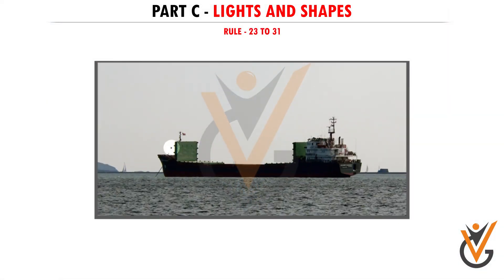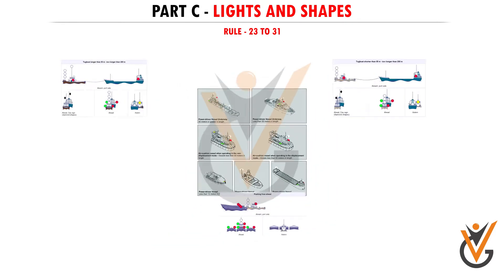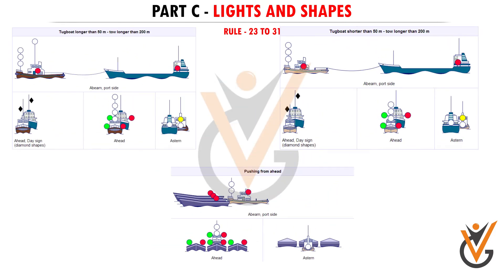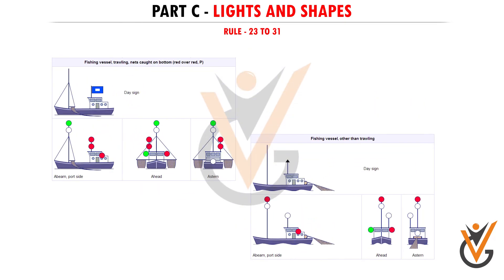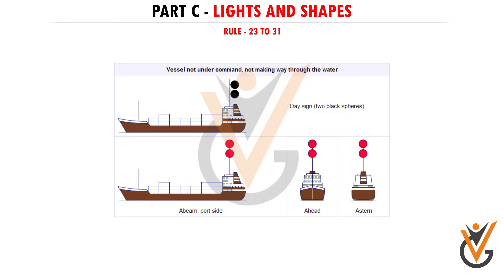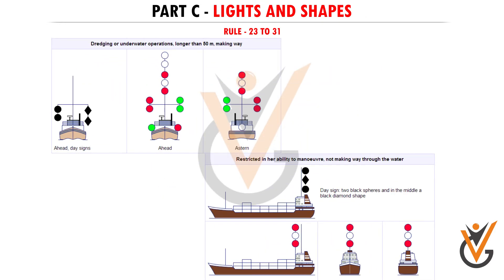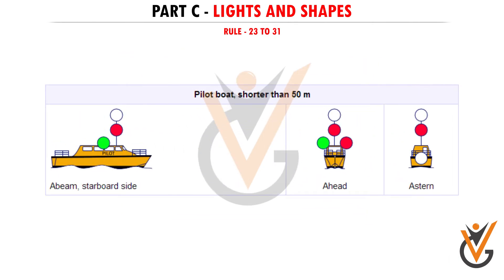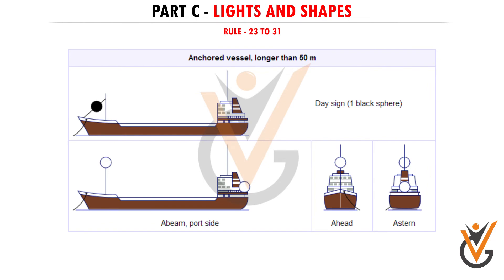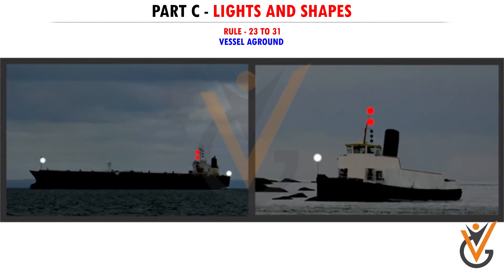Rules 23 to 31 describe various lights and shapes to be shown by power-driven vessels underway, towing and pushing vessels, sailing vessels, fishing vessels, vessels not under command or restricted in their ability to maneuver, vessels constrained by their draft, pilot vessels, anchored vessels, and vessels aground.